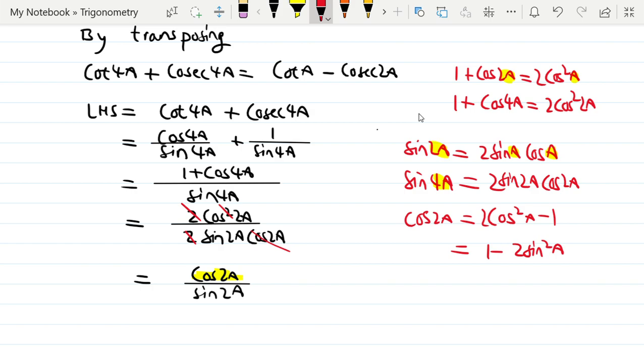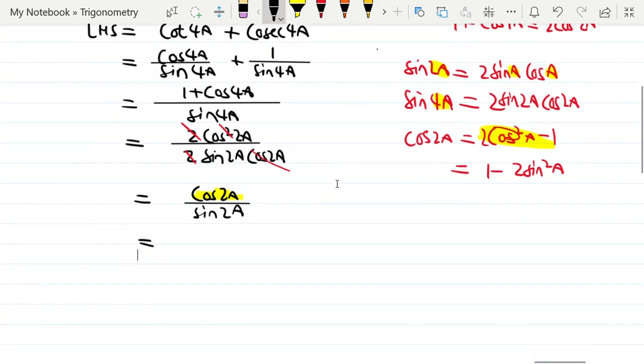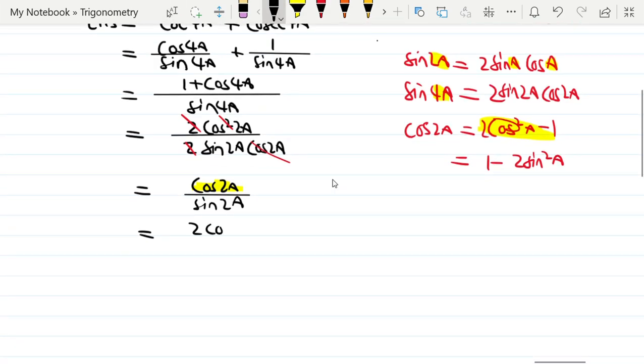CotA will be cos upon sin. So cos upon sin, then cos²A minus 1. Sorry, 2cos²A minus 1, so sin2A. It is there. We separate: 2cos²A minus 1 divided by sin2A, minus 1 divided by sin2A.